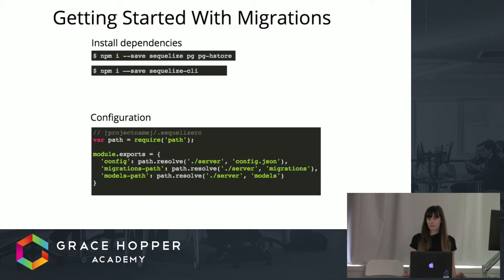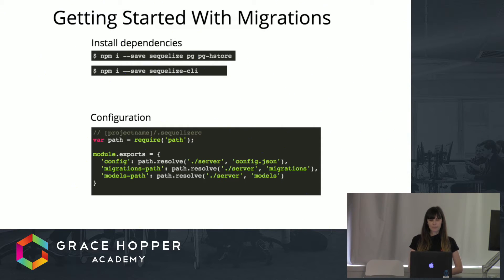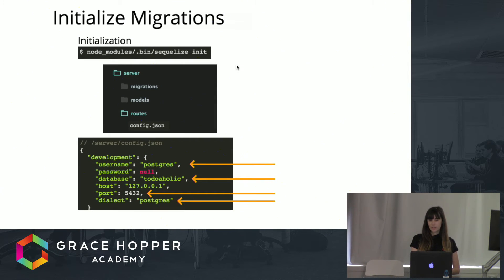To get started with migrations, you install the normal dependencies for Sequelize — sequelize, pg, and pg-hstore — and the Sequelize CLI package. Then you have to configure Sequelize CLI and tell it where your server path is, the migrations path, and the model path. Once you have your configuration file ready, you can initialize migrations with this line of code. That will create a migrations folder, a models folder, a routes folder, and a config.json file in your project.